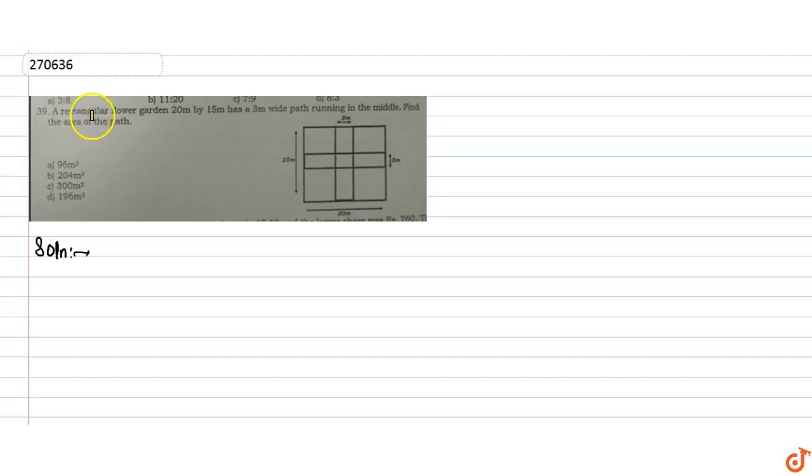In this question, it is given that a rectangular flower garden 20 meters by 15 meters has a three meter wide path running in the middle. We have to find the area of the path.